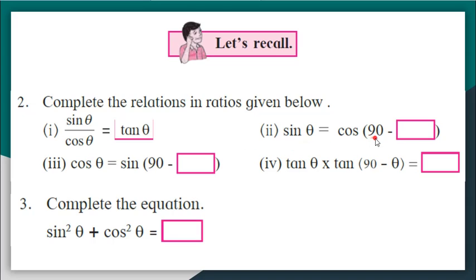Sin theta is cos 90 minus how much? Try to recall, sin theta is cos 90 minus theta itself, which means sin 30 is equal to cos 60. Sin 45 is equal to sin 45. If you remember, we have done these kind of questions earlier. Similarly, cos theta is sin 90 minus theta. And a special relationship that tan follows is tan theta multiplied by tan 90 minus theta is nothing but 1.